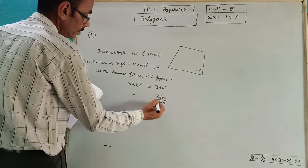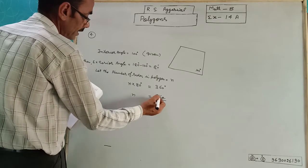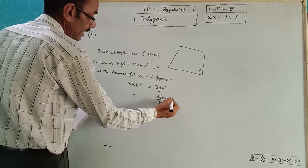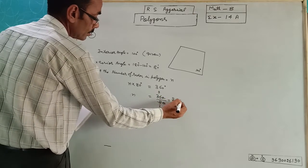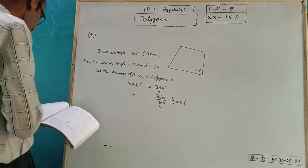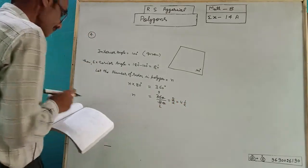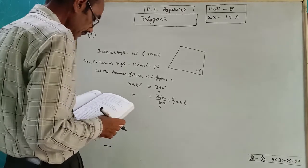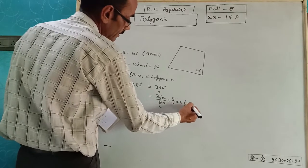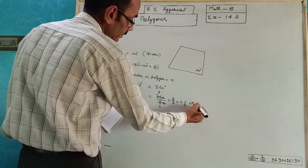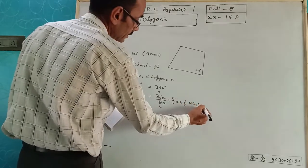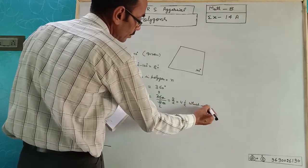360 divided by 80: 4 divided by 8 gives 9 upon 2, that is 4 and a half — which is a mixed fraction. The number of sides cannot be a mixed fraction.